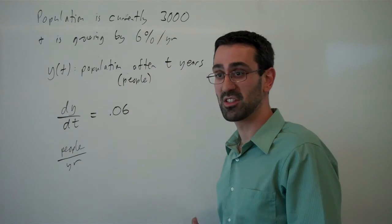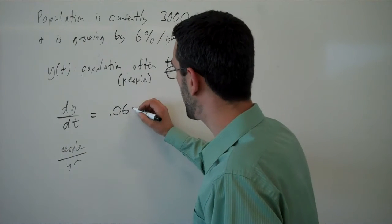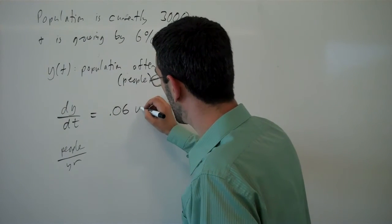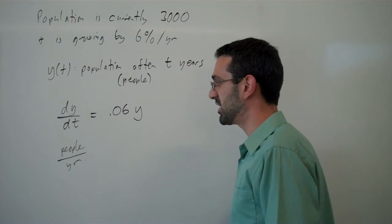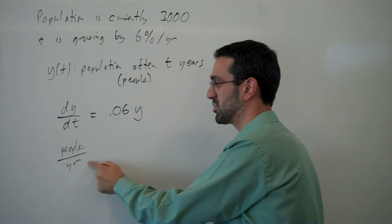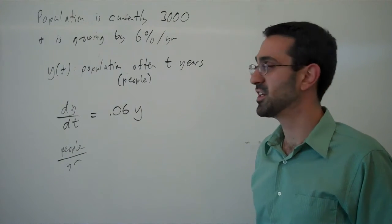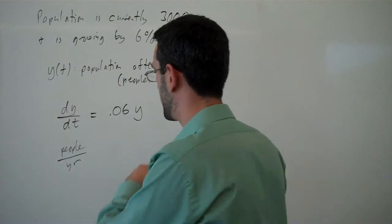So 0.06 times y, the current population. This is in people, this is per year, and so we're getting people per year out of this differential equation, or out of the right side.